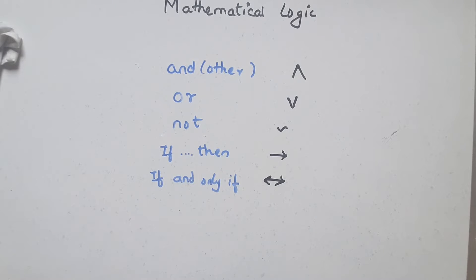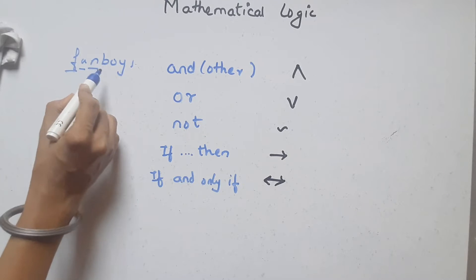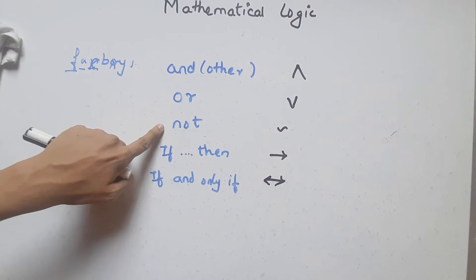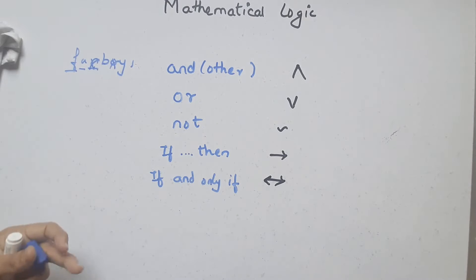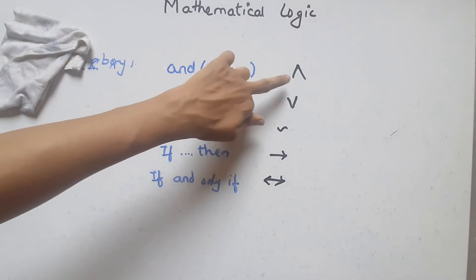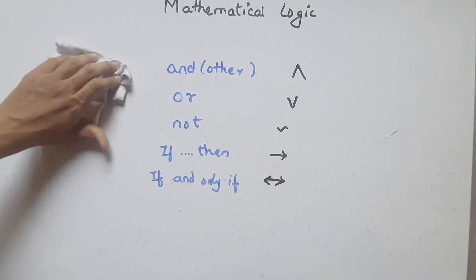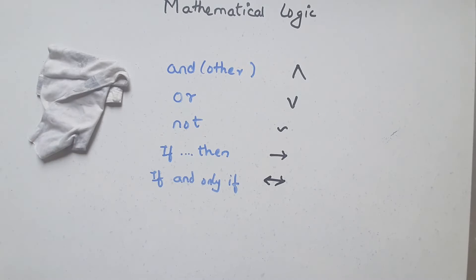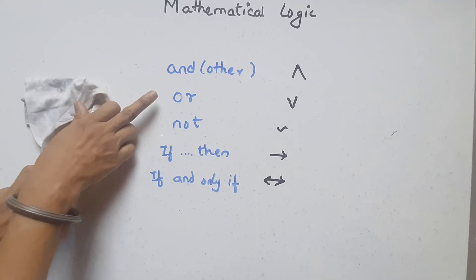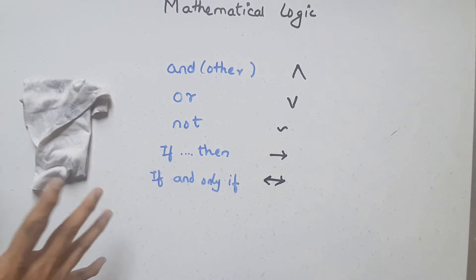AND is known as conjunction. OR is known as disjunction. NOT is negation. IF-THEN is conditional, and IF AND ONLY IF is biconditional. Regarding AND — other conjunctions from grammar like BUT, YET, SO, FOR can also be used in place of AND and will use the same AND symbol (∧). However, NOT and OR each have their own specific separate symbols.